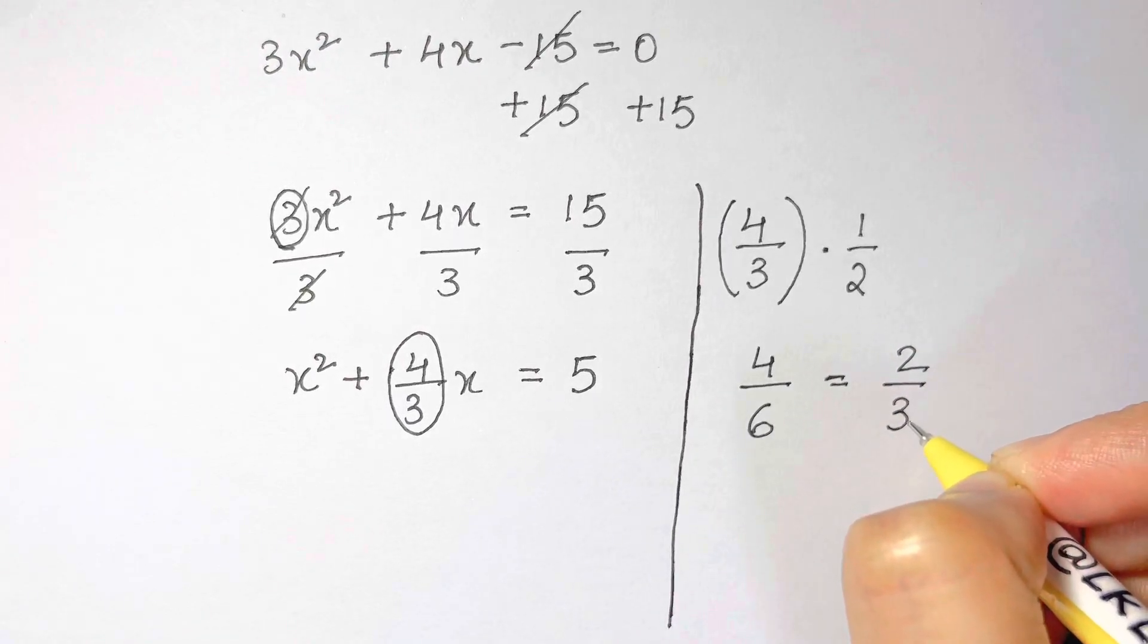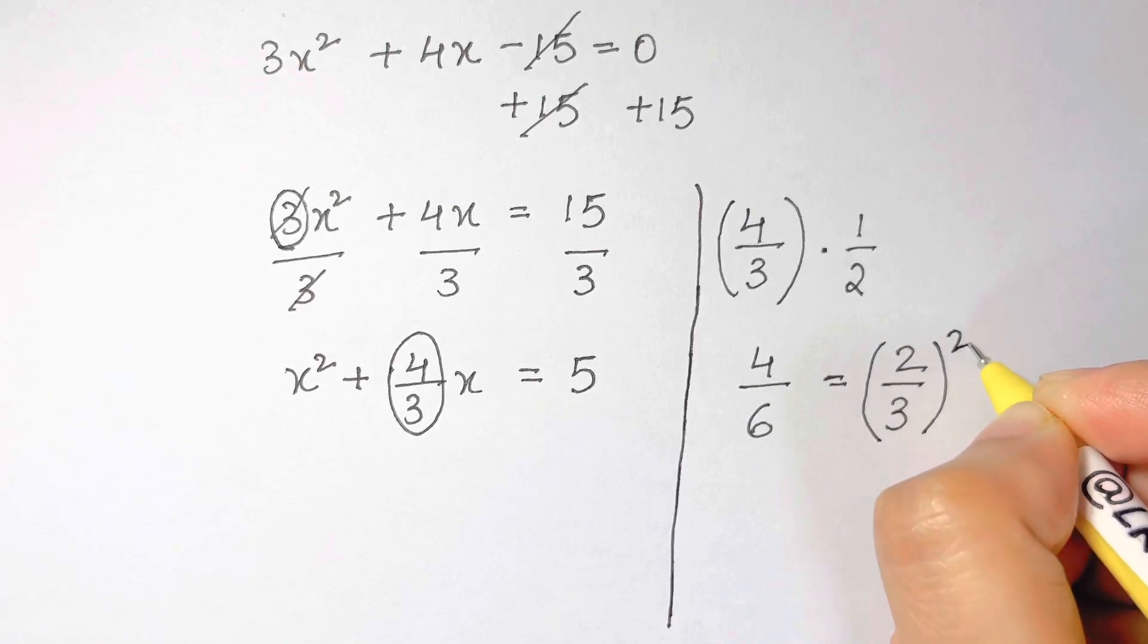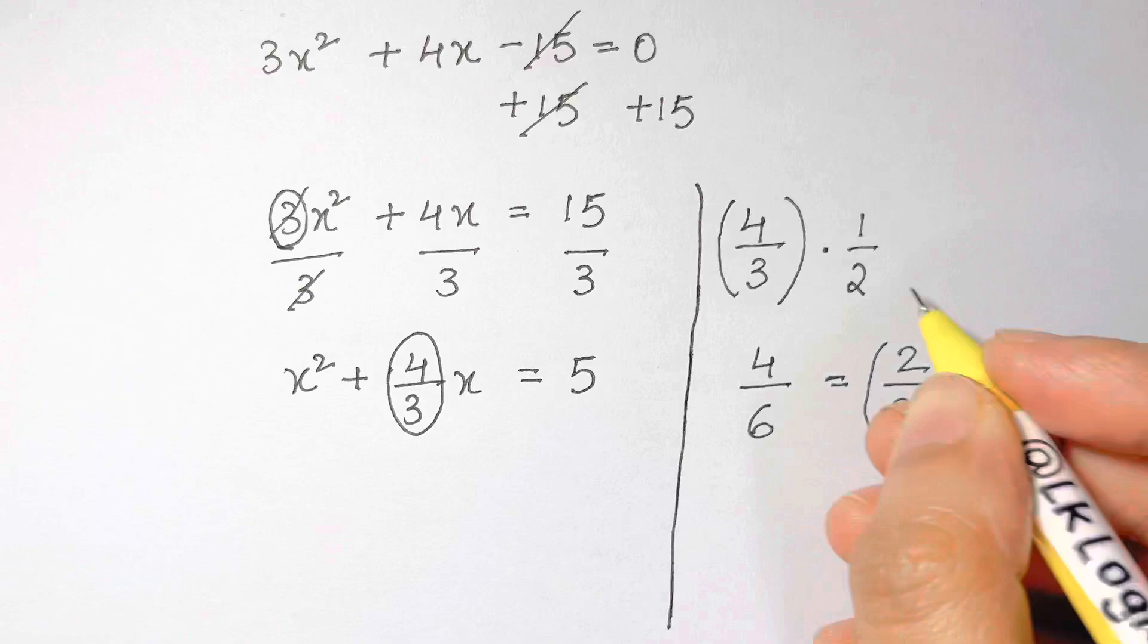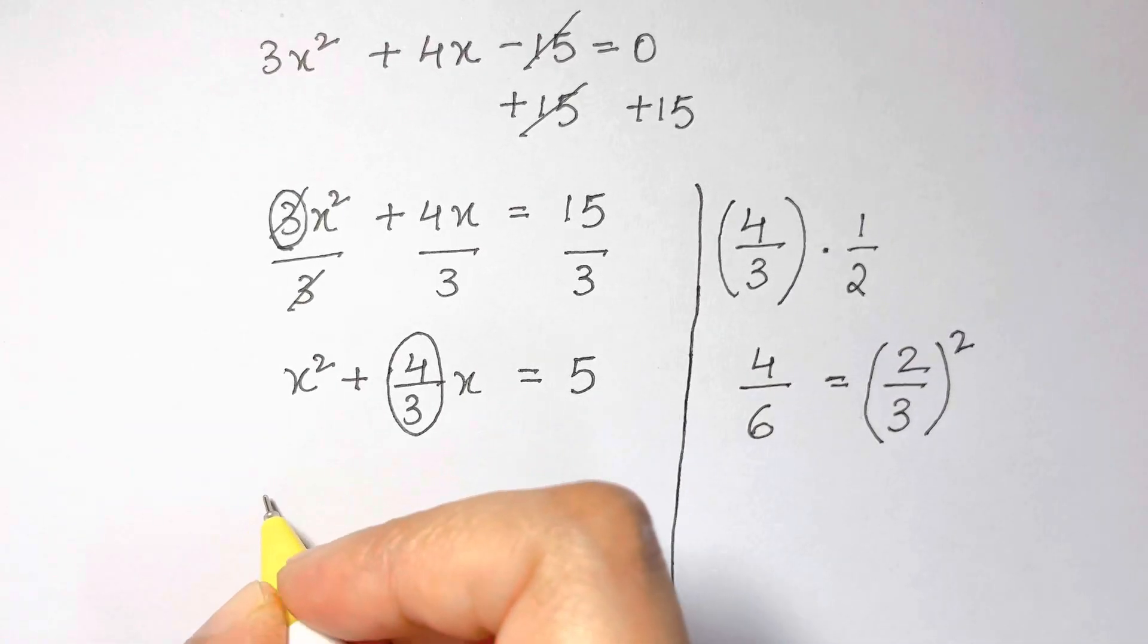And now whatever you got, you must take the square of this one. So we are going to add this quantity on both sides of this equation. Let's go ahead and do the next step.